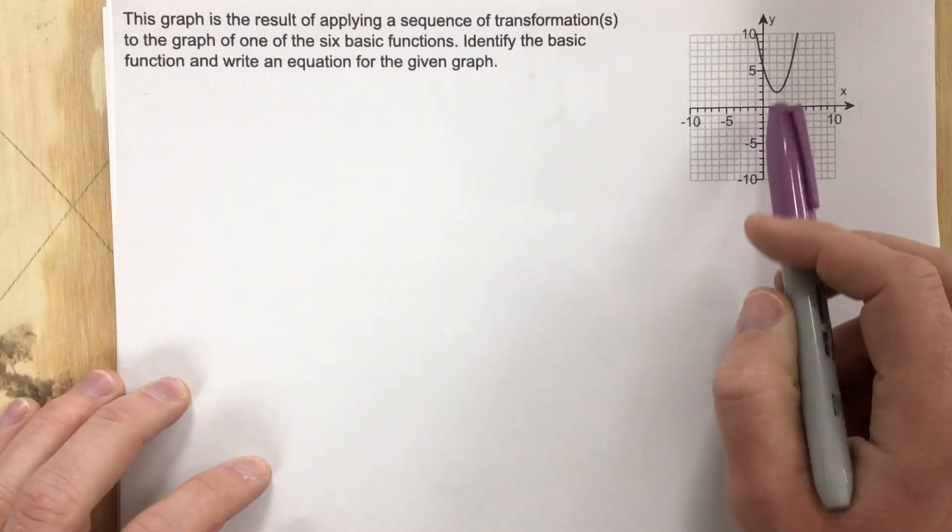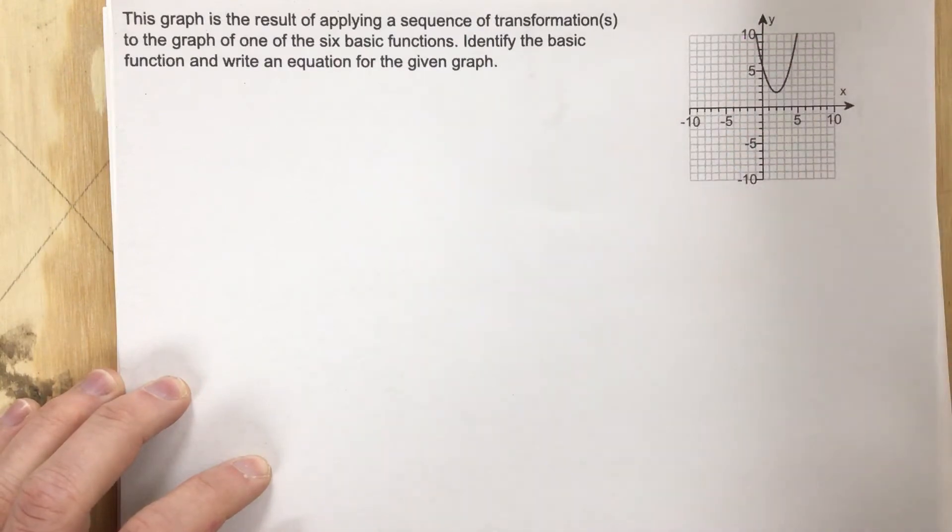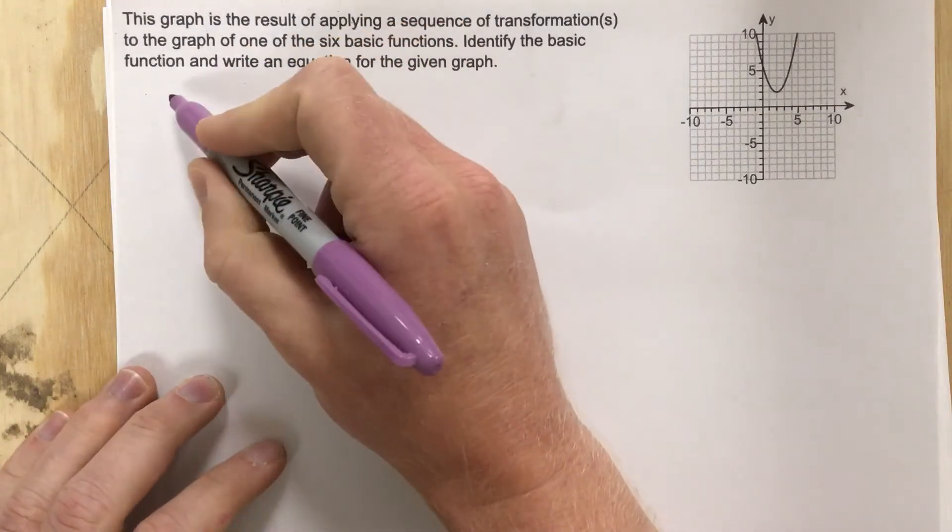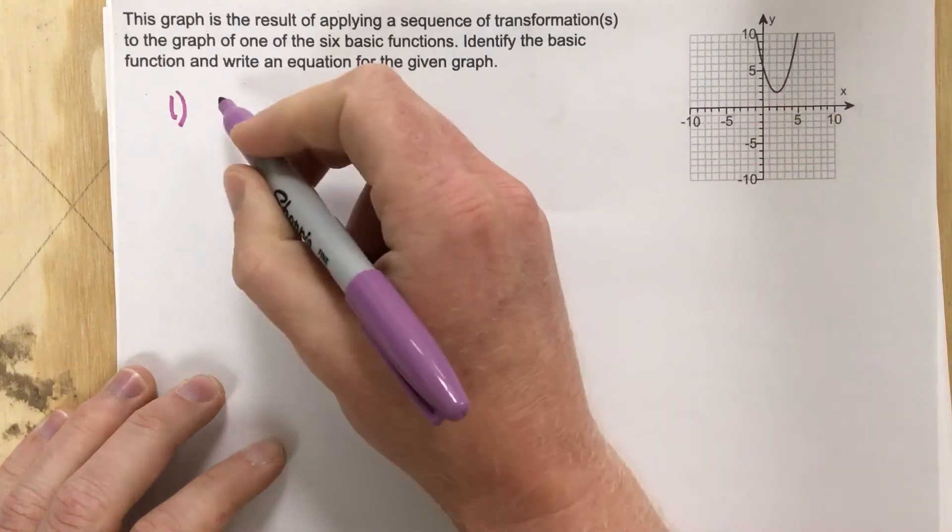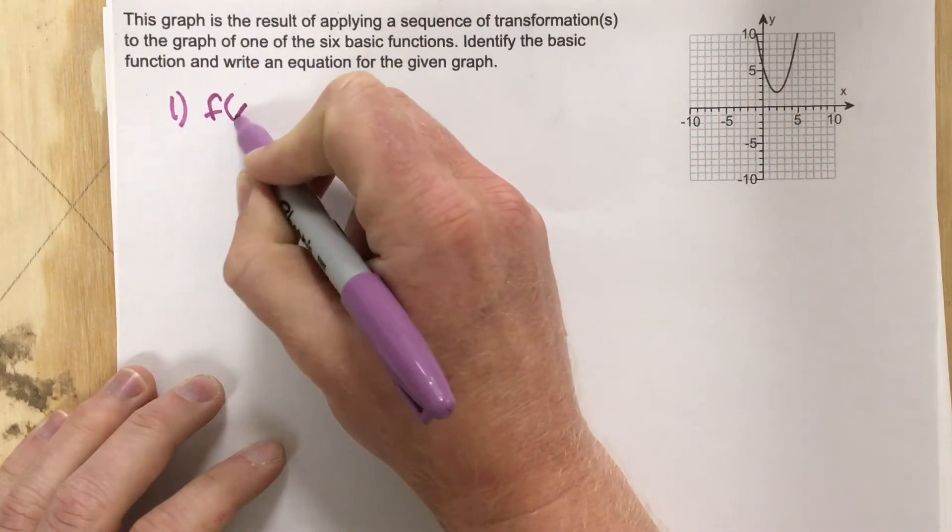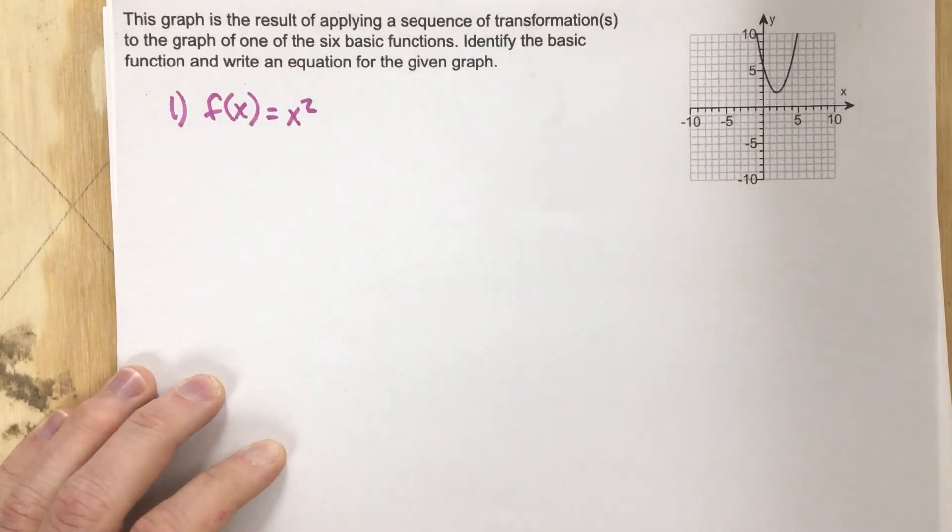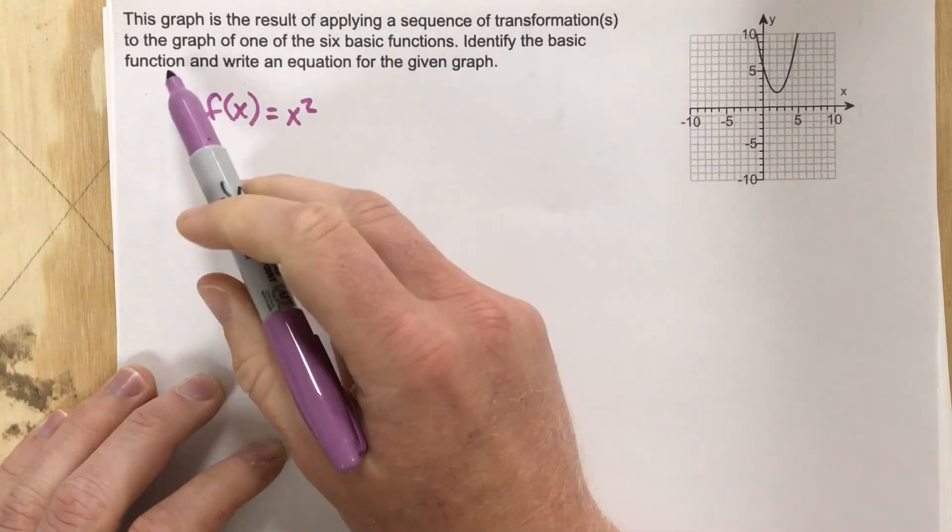So first of all, the basic function we can see is a quadratic or a parabola. We can say that function, we're just going to call this part one. The parent function of that would be f of x equals x squared because we know it's a quadratic or parabola. So that's the identify the basic function part.